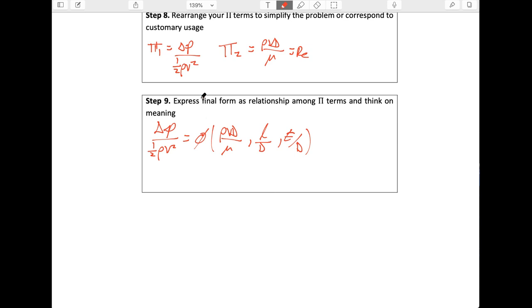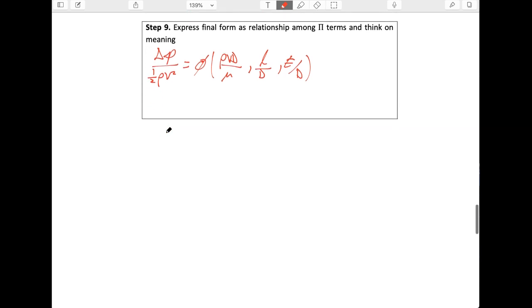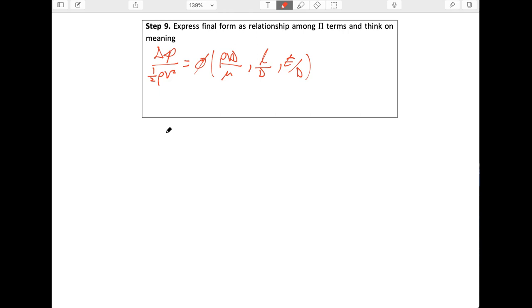So now, what we would do is we would go out and we would construct an experiment that varies each of these three things independently, and that gives us this function, and now we can use this to describe complicated systems. So that really finishes what I wanted to show you here. However, if you want to hang on for a little bonus, check this out. You'll get to find out where that Moody diagram came from.